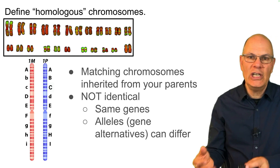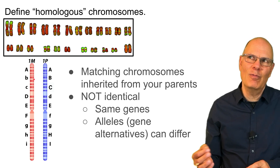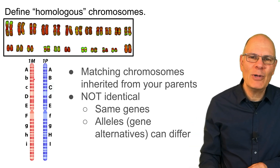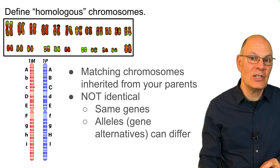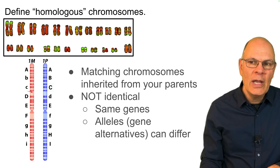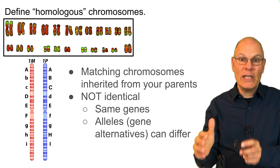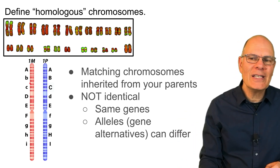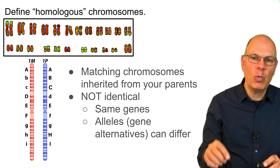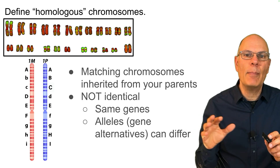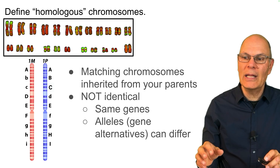Let's use the analogy of a gene as a recipe. The one you inherited from your mom, if that were a recipe for tomato sauce, maybe it has a lot more garlic. The one from your dad might have a lot more basil. Thinking more biologically, if C refers to a specific protein, the DNA coding for a specific sequence of amino acids might be slightly different in what you inherit from your mom and your dad — even to the extent where the amino acid sequence of that protein differs. So the genes are the same, but the alleles might be different. That's what homologous means.